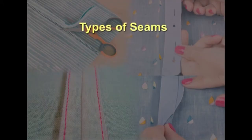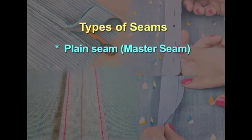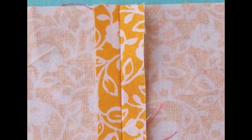The most popular seam is the plain seam, also referred to as the master seam, and it is the most widely used seam in garment making. It is the easiest way of making seams and is used on all types of fabrics except very transparent types. It is a pliable and inconspicuous seam, suitable for mostly firm fabrics that do not ravel and will not be subjected to hard and frequent laundering.